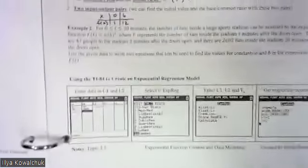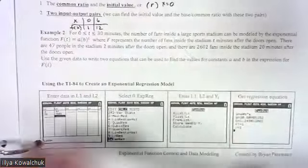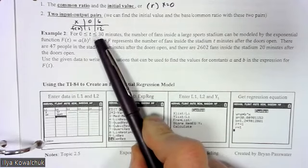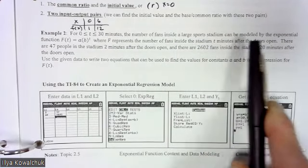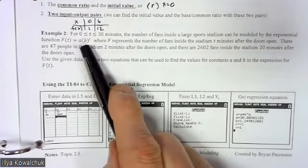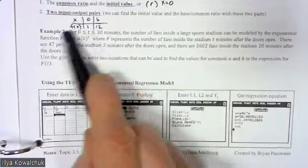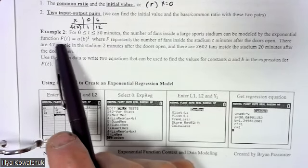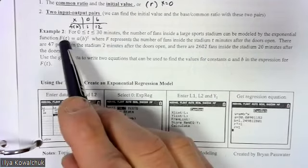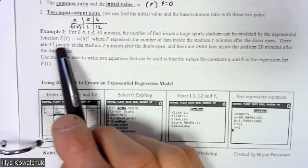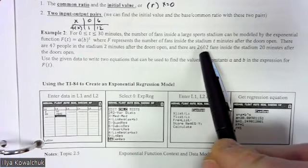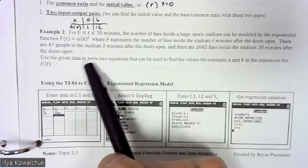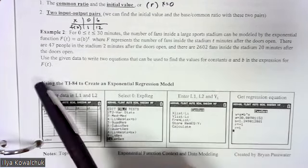Let's focus on Example 2. For zero less than t less than or equal to 30 minutes, the number of fans inside a large sports stadium can be modeled by the exponential function f(t) = a·b^t, where f represents the number of fans t minutes after the doors open. There are 47 people in the stadium two minutes after the doors open, and 2602 fans 20 minutes after the doors open. Use the data to write two equations to find constants a and b.